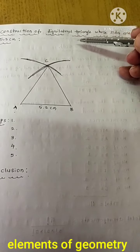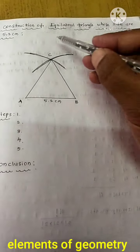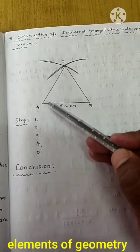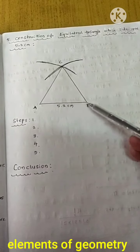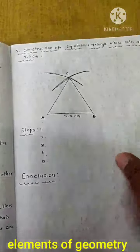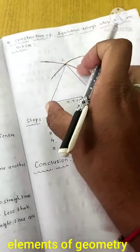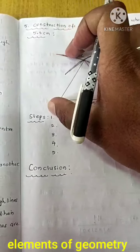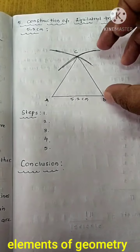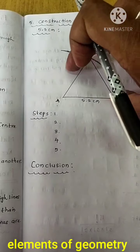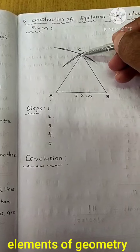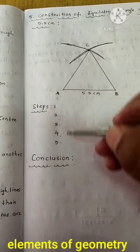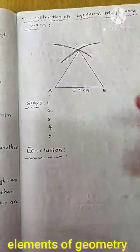Number 5 is the Construction of Equilateral Triangle whose sides are 5.2 centimeters — write this along with the steps. Step 1: draw a line segment of 5.2 cm using a scale. Step 2: use a compass, take 5.2 cm length, and draw an arc. Step 3: use the compass again at point B, take 5.2 cm length, and draw one more arc. Step 4: the point of intersection is C. Step 5: join AC and BC — triangle ABC is the equilateral triangle. Write these steps and construct the triangle.